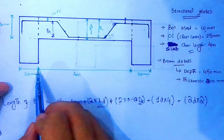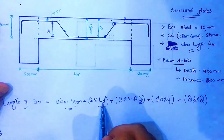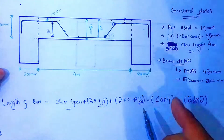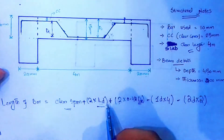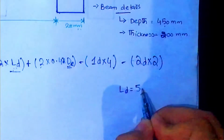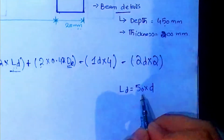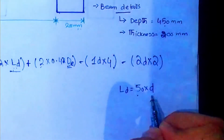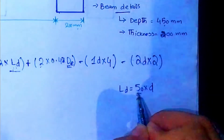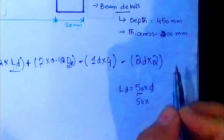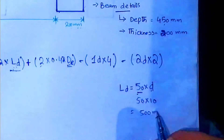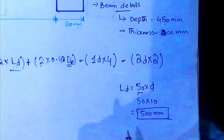The clear span is simply the distance between the two beam faces. Development length LD is calculated by the formula LD = 50×D, where D is the diameter of the bar. This can be 40D, 35D, or 60D depending on the design, but here we use 50×D. So LD = 50×10 = 500 millimeter.